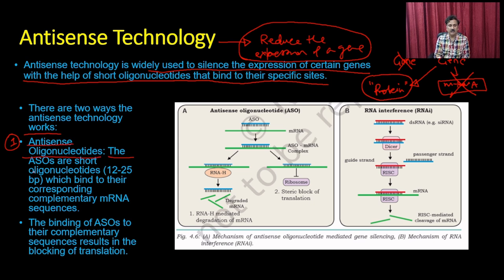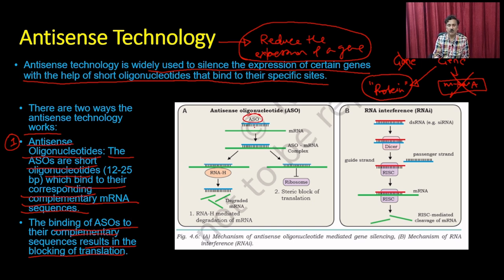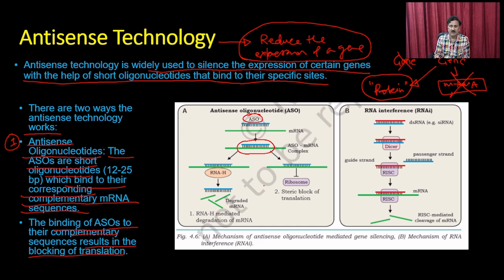In approach one, you can use antisense oligonucleotides — short oligonucleotides that bind to their corresponding complementary messenger RNA sequence. This binding results in the blockage of translation. The antisense oligonucleotide is complementary to the messenger RNA, causing formation of a double-stranded RNA. Since RNA must be single-stranded to be recognized by the protein synthesis machinery, the double-stranded form creates steric hindrance, blocking the ribosome and abolishing protein production.